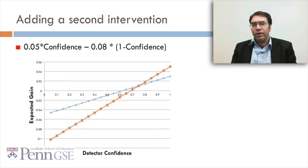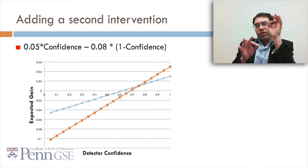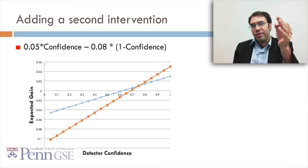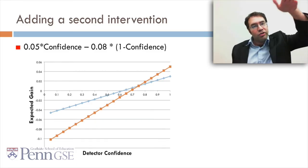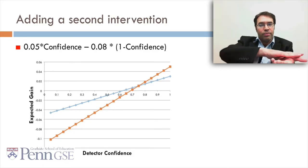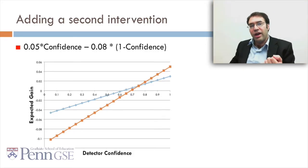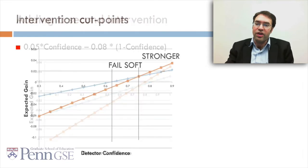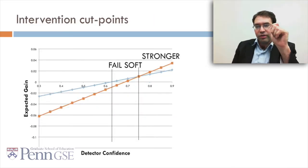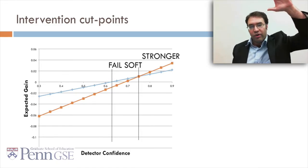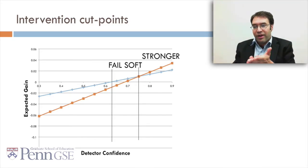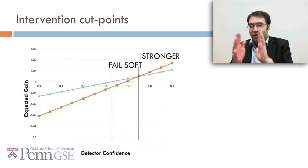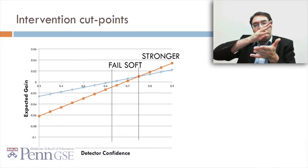What if we had a second intervention? This intervention is stronger, but it's also more harmful if wrongly applied. If it's correctly applied you get a boost of 0.05, but if it's incorrectly applied you lose 0.08. In this case you can plot a second line — the orange line — and see where the two lines intersect. There's a certain range where the weaker intervention starts to work, where it comes above 0 and is better than the stronger intervention. That's the fail soft range — in this case between about 61–62% and about 75%. Above 75%, you want to use the stronger intervention.